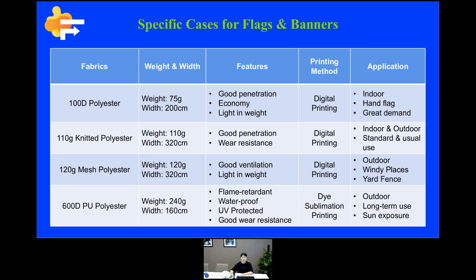Another one I would like to talk about is 600 Denier PU polyester. It's actually our standard fabric for tents. But if you require a specific purpose for a banner — like outdoor use with sun exposure, or durable enough for long-term use — then it's also a good option for banners. Of course, price may also be one of the factors that affect your selection. 100 Denier polyester is the most economical fabric for flags and banners, so for large orders it can help you reduce cost. As for 110 grams knitted polyester, it's the most cost-effective for usual use.